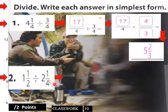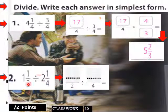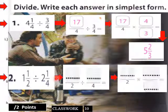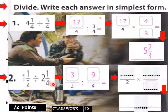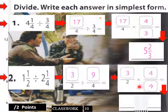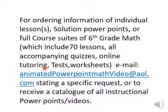Next: one and one-half divided by two and a quarter. One and one-half becomes three halves. Two and a quarter becomes nine fourths. Invert and multiply: three halves times four-ninths. That equals twelve eighteenths, which simplifies to two-thirds. That's Lesson 4.3 part one. Parts two and three are also available, along with task worksheets, tutoring, solution PowerPoints, and everything you need for sixth grade math. Thank you.